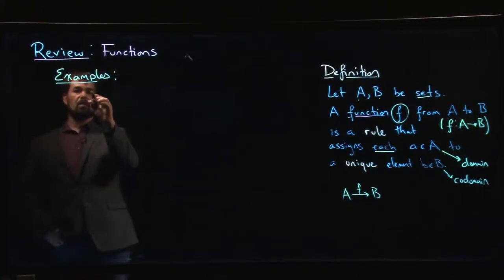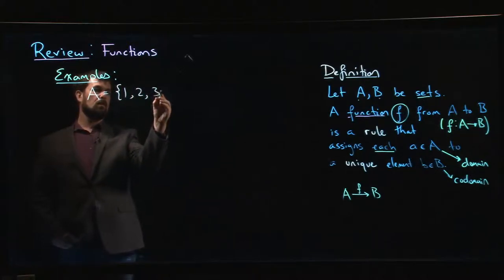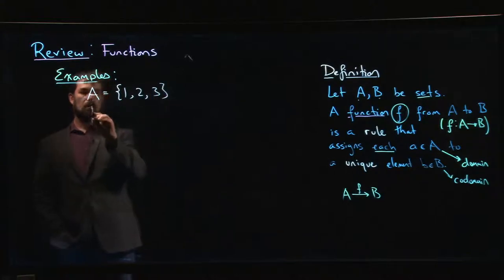So here's an example. We're going to explicitly construct a function. A is going to be the set containing the numbers 1, 2, 3, and B is going to be the set containing letters A and B.